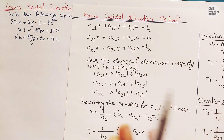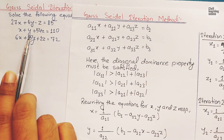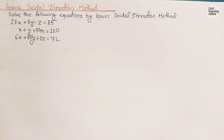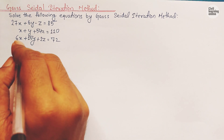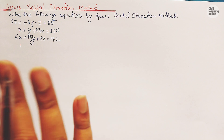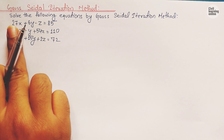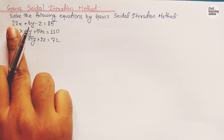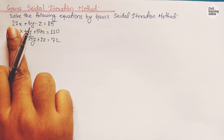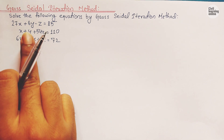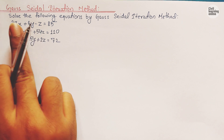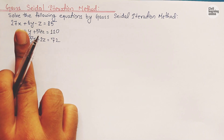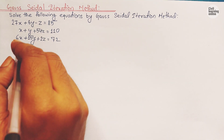For the second property, a22 - we need to do some arrangement. In the first equation, the coefficient of x must be the highest among all variables. Similarly, in the second equation, the coefficient of y must be highest, and in the third equation, the coefficient of z must be highest compared to the other two variables.